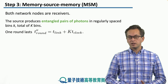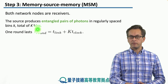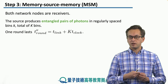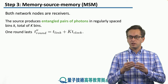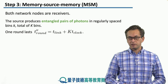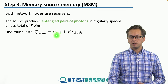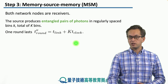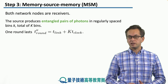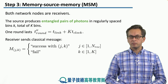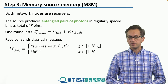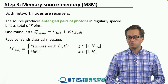One round lasts the following length of time. We have to send a message from the source to the receiver, which takes time t-link. We also have to take into account the total time it takes to generate those k photons, which is given by capital K times t-clock. Both receivers have to write a log of the measurement successes or failures for each individual photon.